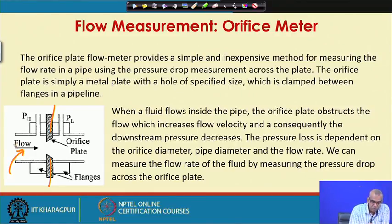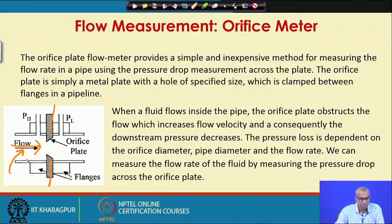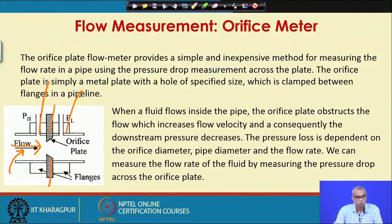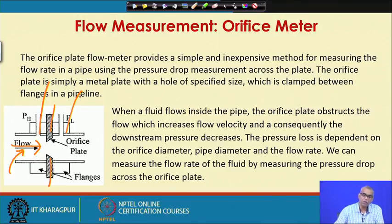When the fluid passes through the orifice plate, as it meets the restriction the velocity increases and consequently the pressure decreases. There is one connection for pressure measurement and another connection for pressure measurement. We measure the pressure drop across the orifice plate and relate this pressure drop with the flow rate of the fluid.